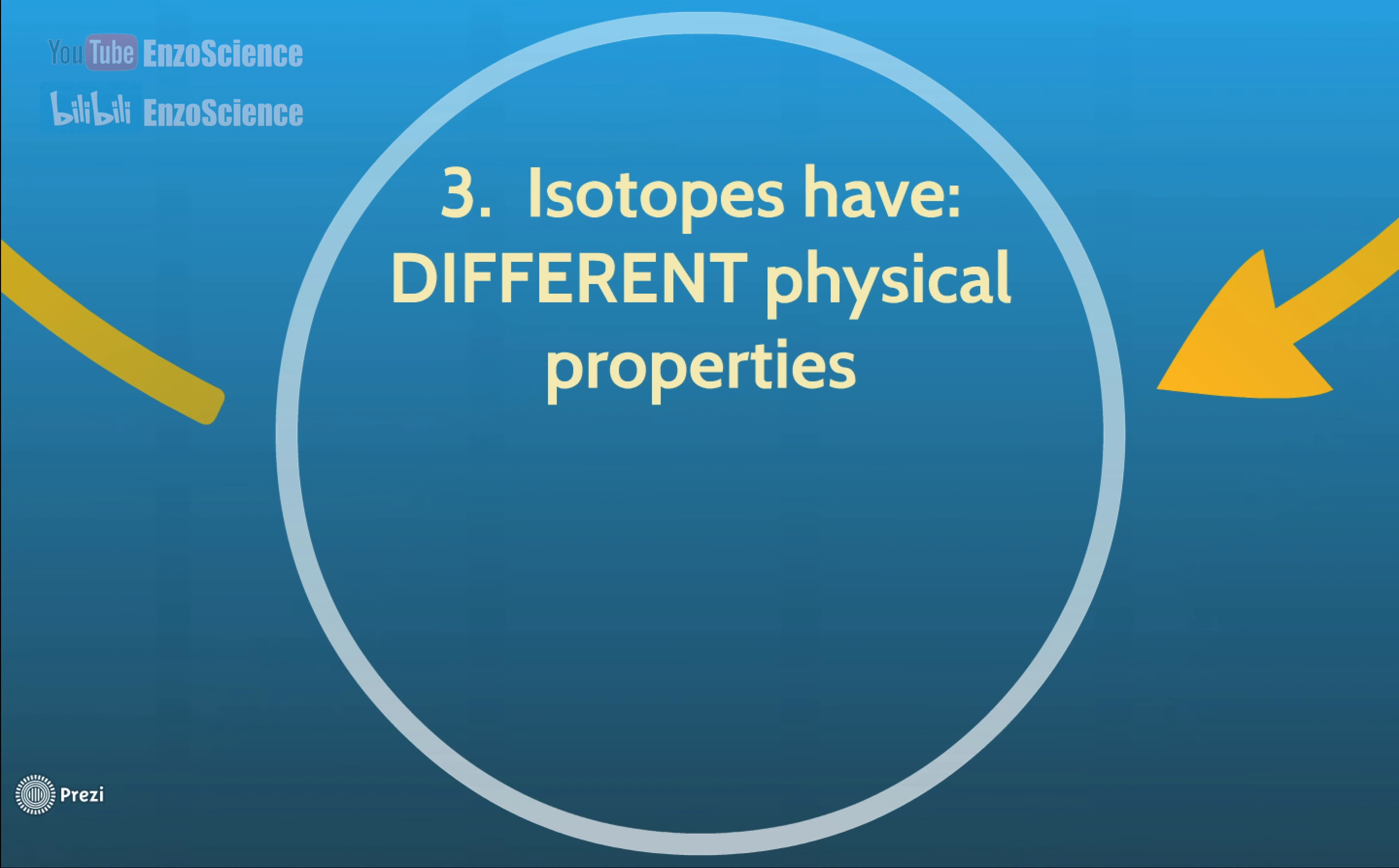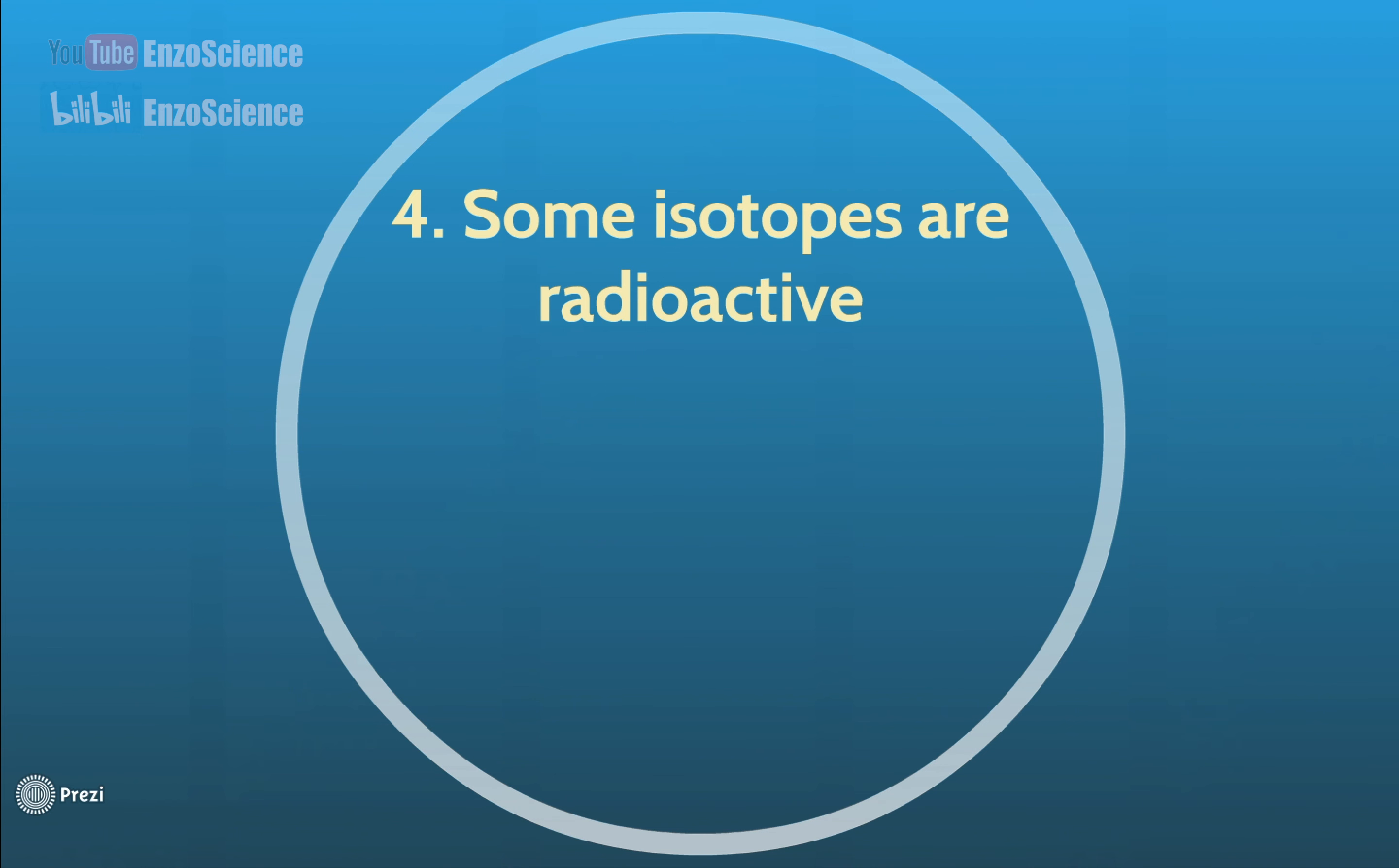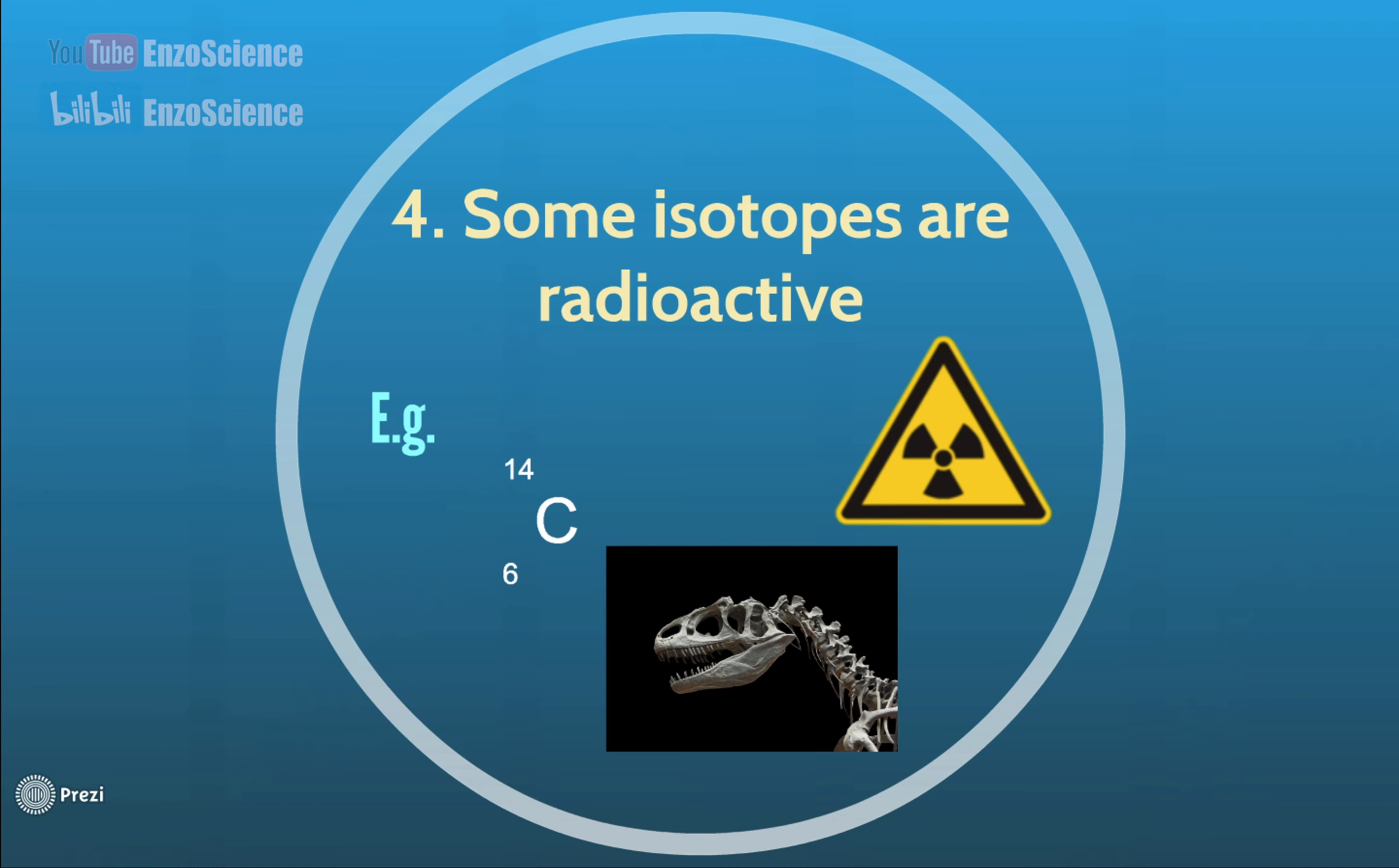But they do have different physical properties. This one is straightforward, because their mass numbers are different, so they must have their own mass and densities respectively. Point 4: Some isotopes are radioactive. We won't dig further about this point, but basically, when you see this symbol, you will know radioactive substance is around you, and you need to be very careful. An example is carbon-14. It is useful when determining the age of a piece of fossil, like dinosaur.